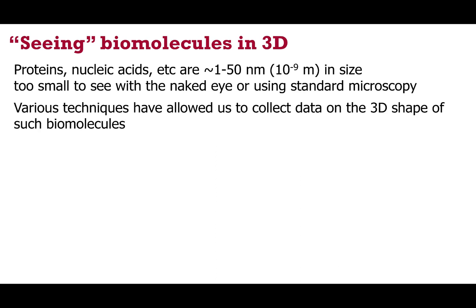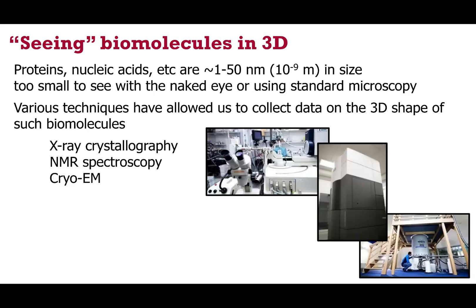Fortunately, various techniques now allow us to collect data on the three-dimensional shape of biomolecules of this type. Those techniques include x-ray crystallography, NMR spectroscopy, and most recently, cryo-electron microscopy. Now each of these different methods generates a large amount of data, and that requires quite a lot of complicated mathematical processing, so mere mortals like the rest of us can't easily understand what that data is showing us.